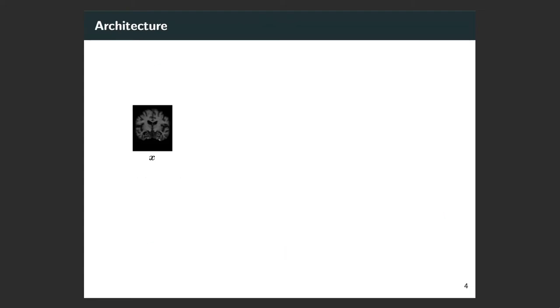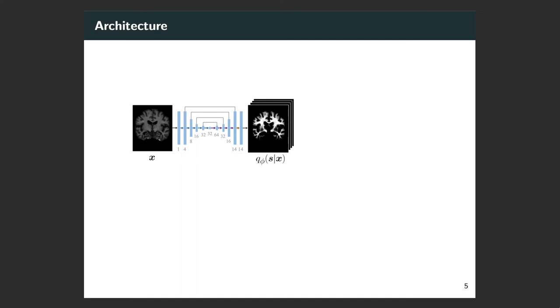Let's go over our architecture. We first pass our input scan into a U-Net in order to obtain the latent representation, which is also our segmentation. Since our latent representation is categorically distributed, we use straight-through Gumbel Softmax in order to sample and allow backpropagation. Finally, we pass our sample segmentation to a simple network for reconstruction.